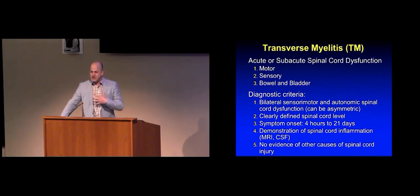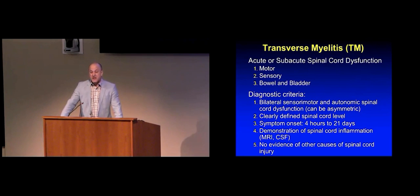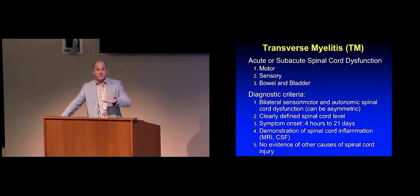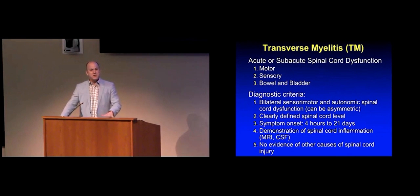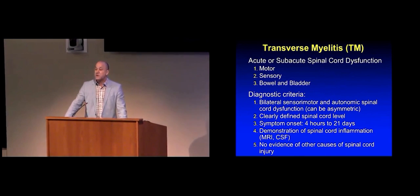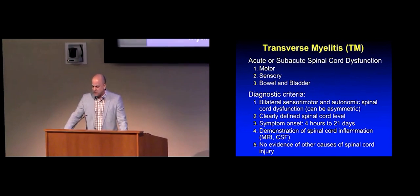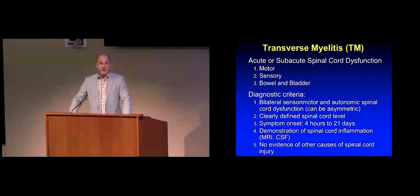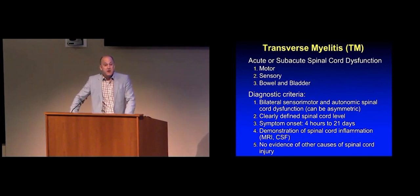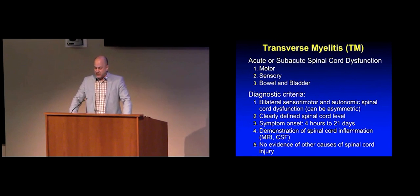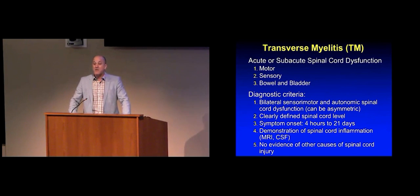The diagnostic criteria include that there be bilateral problems, so it can't just be one little part of the spinal cord. There has to be a clearly defined level of dysfunction — not a diffuse or uncertain localization. Acute or subacute means symptom onset runs its course in as short as four hours or as long as 21 days. We need proof from either imaging or spinal fluid analysis, and we must rule out other causes of spinal cord injury such as trauma, because myelitis refers to some level of inflammation.